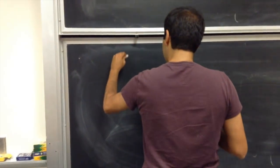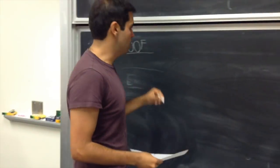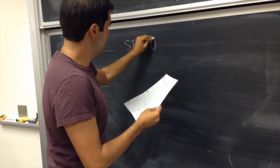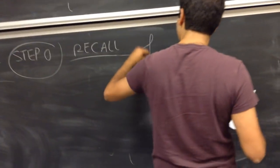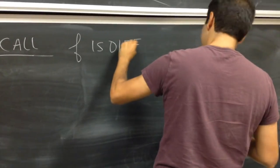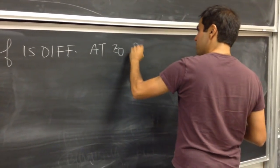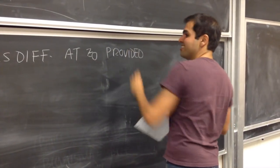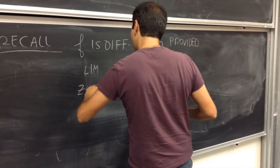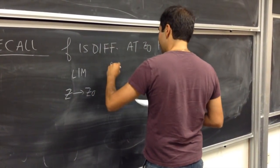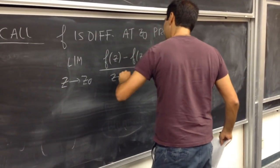So here's a proof. First of all, what does it mean for a function to be differentiable? So maybe step zero. Recall that f is differentiable at z-naught, provided the following limit exists — and it's the same limit as in calculus: limit z goes to z-naught of the difference quotient, f of z minus f of z-naught, over z minus z-naught.